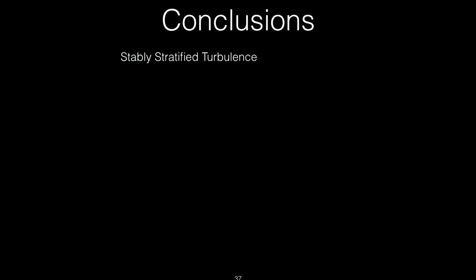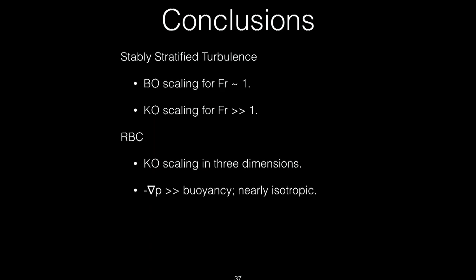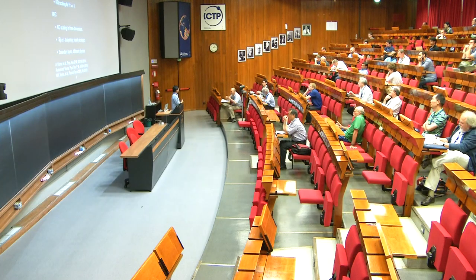I conclude. Stably stratified flows for Froude number or Richardson order one, we get Bolgiano-Obukhov. Bolgiano-Obukhov is, the argument is quite nice, correct, it works. We could verify it through simulation. This part I will skip. I didn't show it. In fact, if our gravity is weak, then we get Kolmogorov. For Rayleigh-Bénard, Kolmogorov is scaling in three dimensions. And the pressure gradient is much bigger than buoyancy. There are a lot of signatures why hydrodynamic turbulence and Rayleigh-Bénard have a lot of similarities. And boundary layers is a different physics, which we are not very confident what would happen there. And I stop here. Thank you very much.